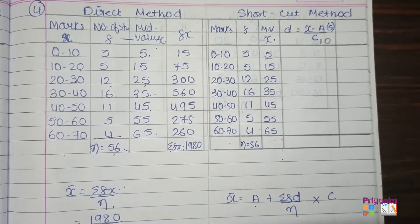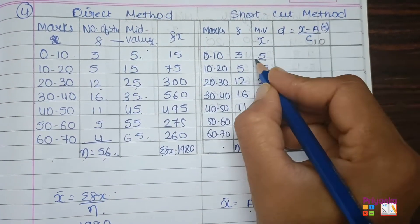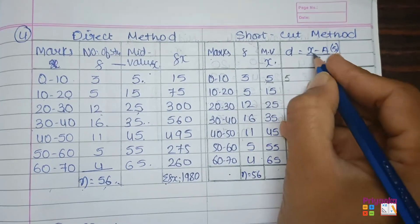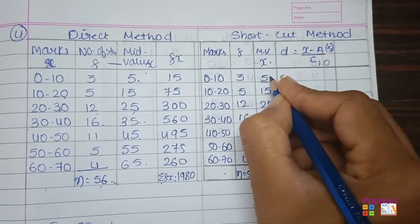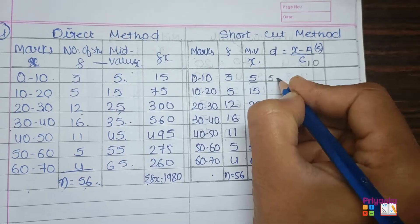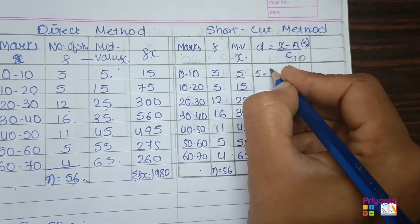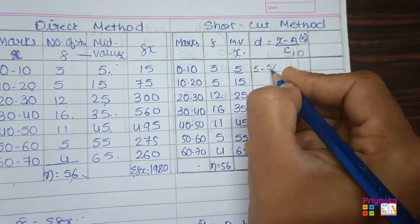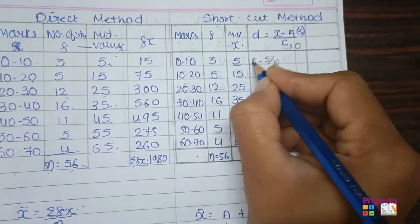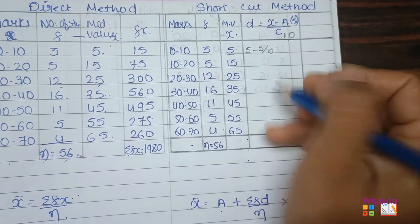So the calculation: d = (x − assumed mean) ÷ c. Take x = 5, minus assumed mean 5, divided by 10. Then 5 − 5 = 0, and 0 ÷ 10 = 0. So the d value for the first class is 0.